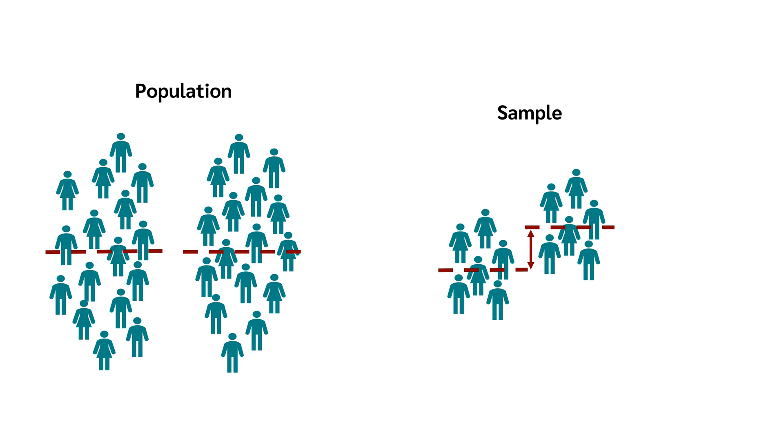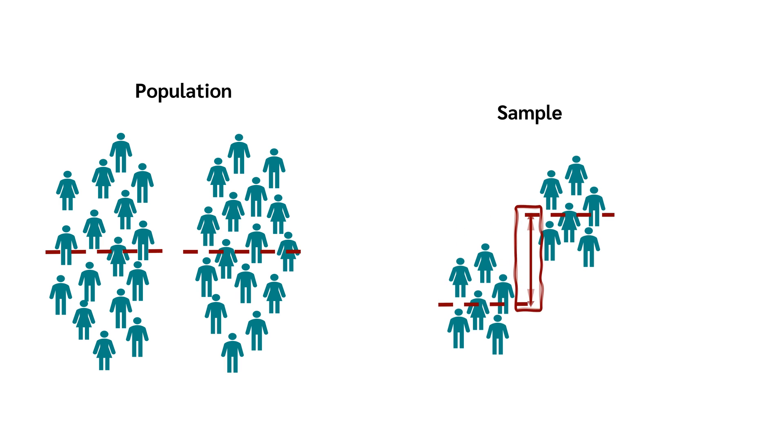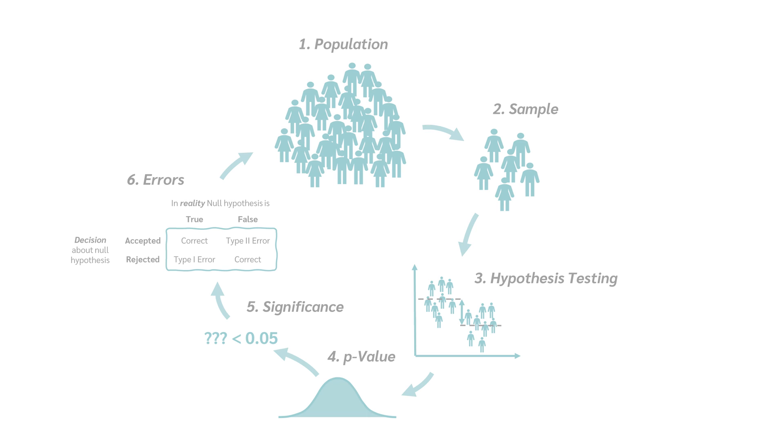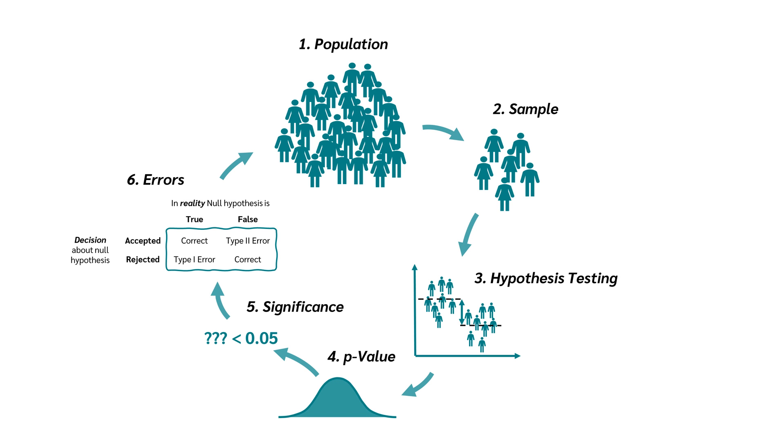the p-value indicates the probability of getting a sample that deviates as much as our sample or one that even deviates more than our sample, assuming the null hypothesis is true. But at what point is the p-value small enough for us to reject the null hypothesis?